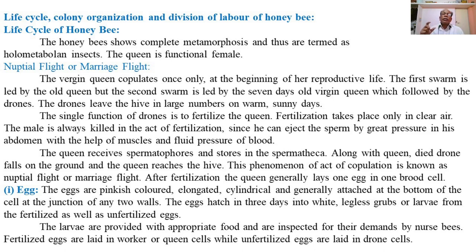As the queen bee matures, the active virgin queen undergoes the nuptial flight or marriage flight, during which she meets with the drone at the beginning of her reproductive life. The first swarm is led by the old queen, but the second swarm is led by the seven-day-old virgin queen and is followed by the drones.